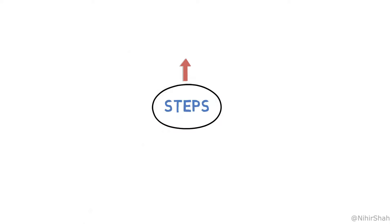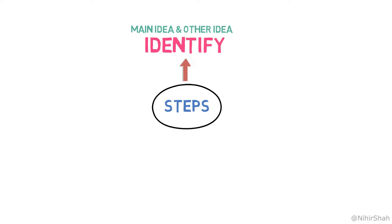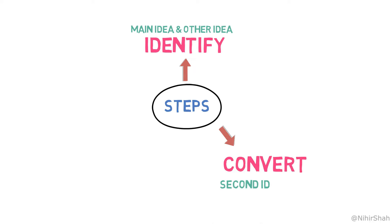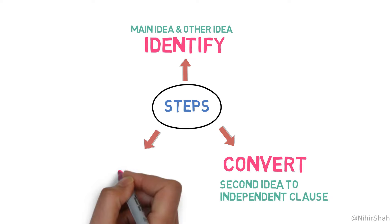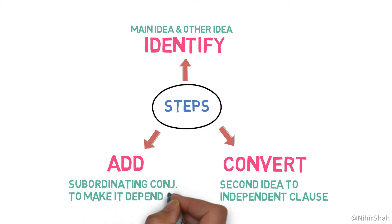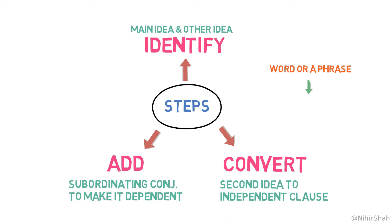The steps are: Number one, identify the main idea and other ideas given in the simple sentence. Number two, convert the second idea into an independent clause. And number three, add an appropriate subordinating conjunction to the clause to make it a dependent clause and form the sentence with some necessary changes. The simple way to understand these steps is that you need to expand a word or a phrase into a dependent clause.